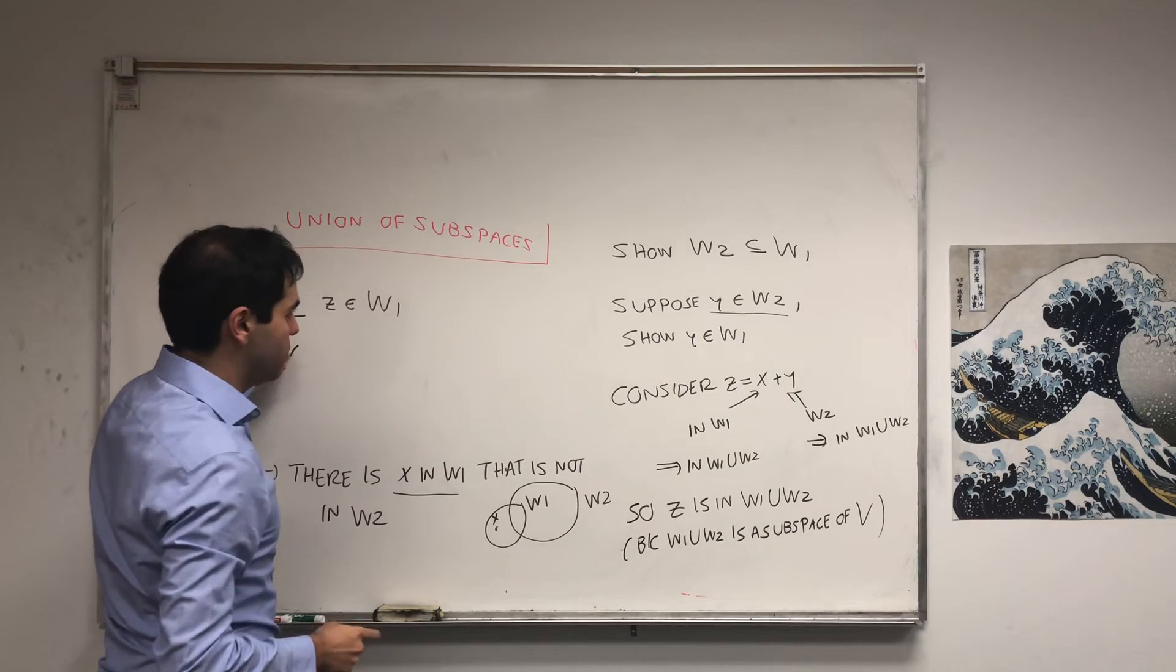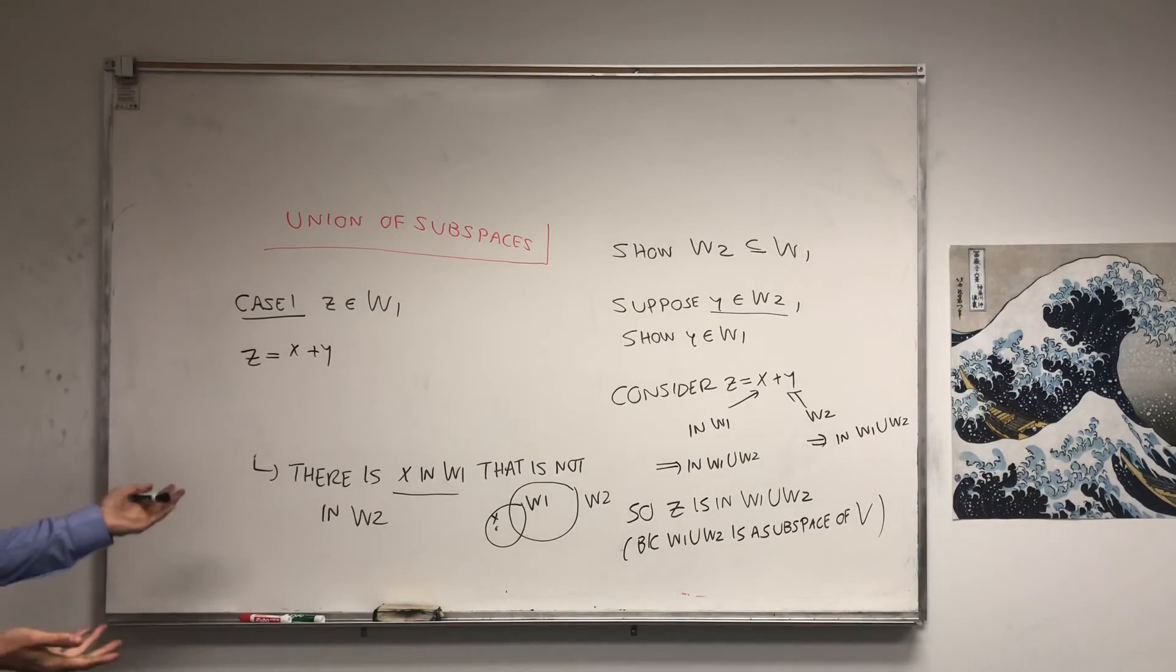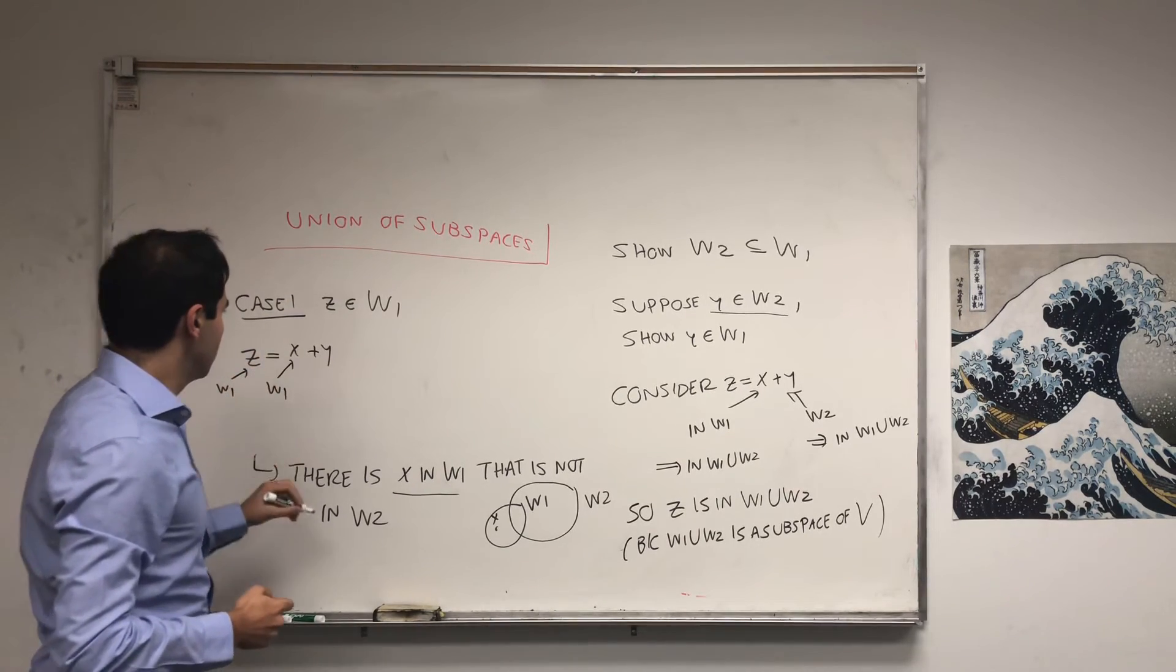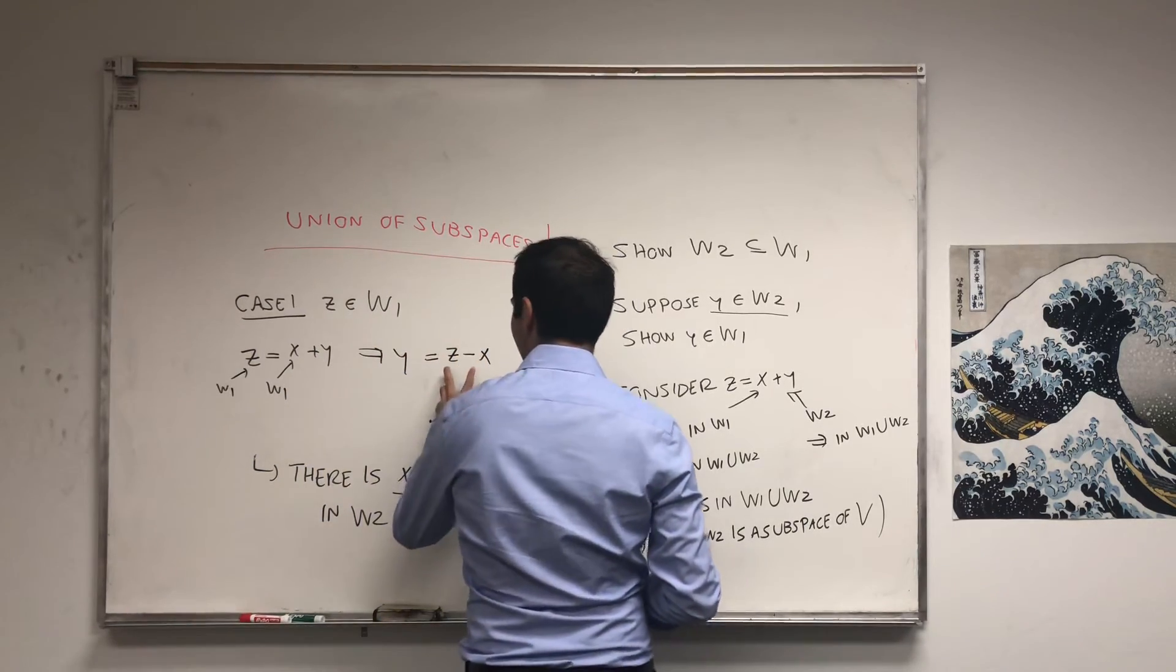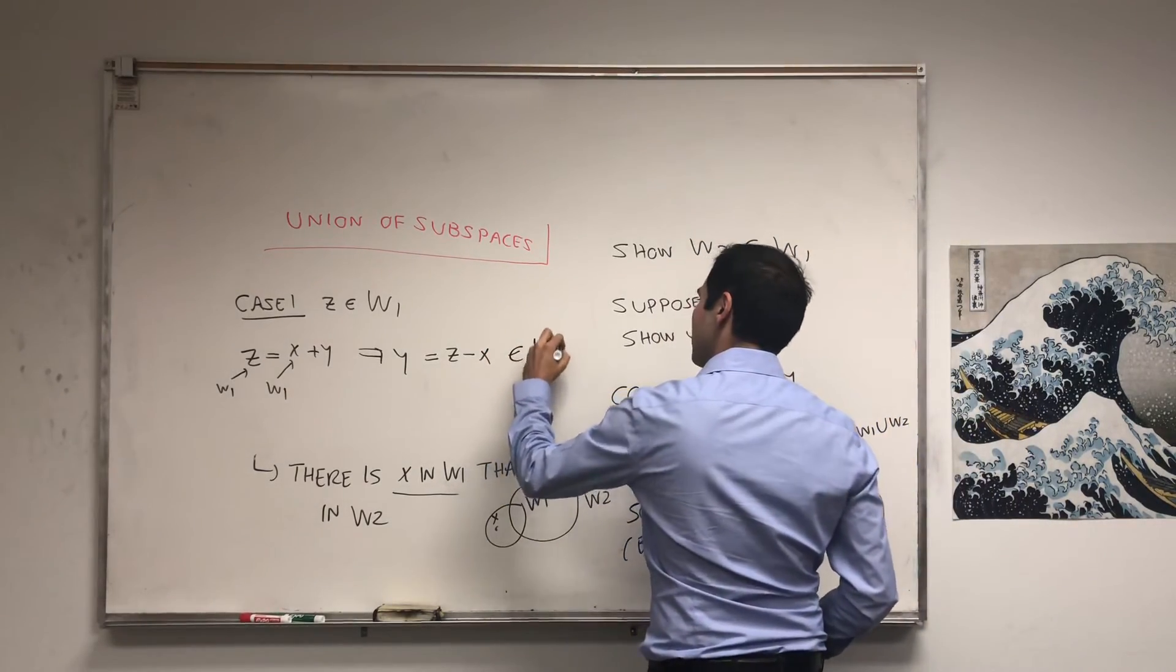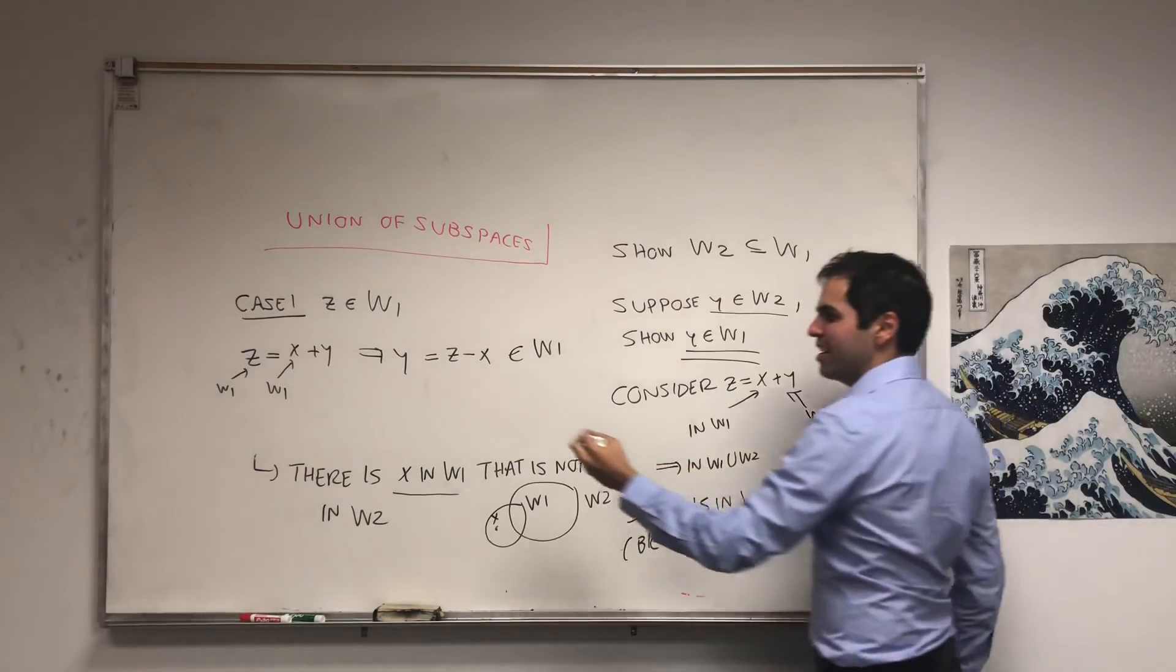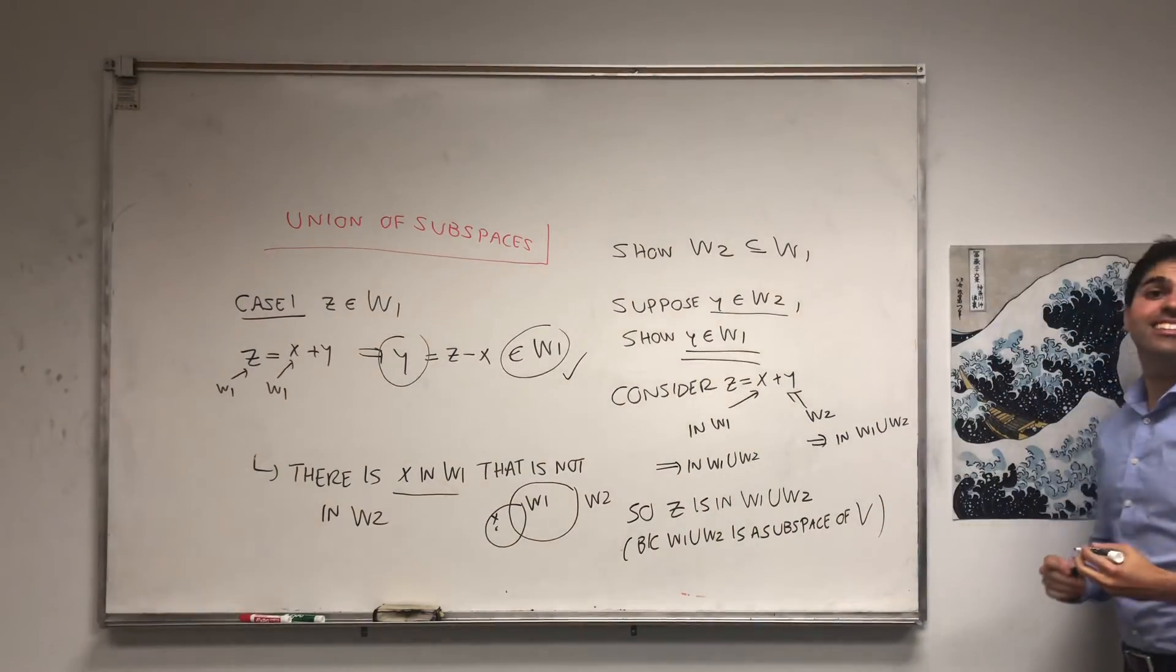Now, z, that's x plus y. Then, in particular, well, you see z is in W1. x is in W1. So, y, which is z minus x. Well, it's a difference of two elements in W1. That is in W1. Ding, ding, ding! Why do I say that? Remember, we wanted to show that y is in W1. And we have shown that y is in W1. So, in that case, we are done.